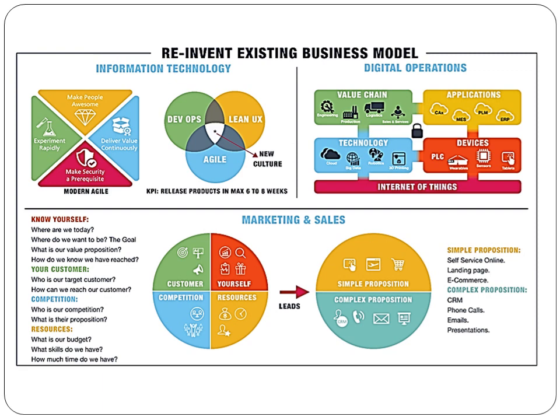Regarding the value chain in marketing and sales, there are two aspects and four parameters to consider: know yourself, know your customer, know your competition, and know your resources. When you consider all these things, it leads to simple propositions and complex propositions. This is the cycle of marketing and sales.